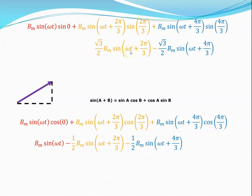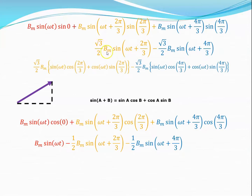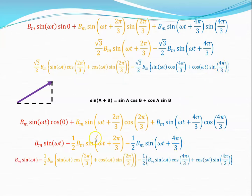In both the vertical and horizontal components there is a sine(a) + sine(b) form, and from trigonometric identities sine(a + b) = sine(a)cosine(b) + cosine(a)sine(b), so I can split this out. That gives √3/2 · BM · [sine(omega T)cosine(2π/3) + cosine(omega T)sine(2π/3)] and −3/2 · BM · [sine(omega T)cosine(4π/3) + cosine(omega T)sine(4π/3)].